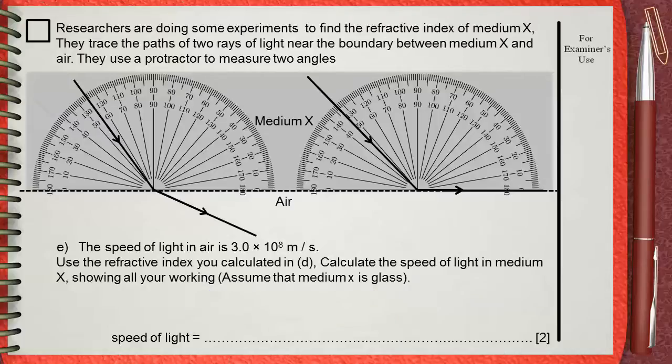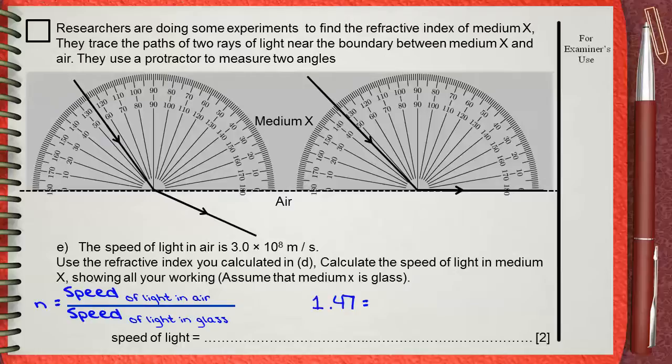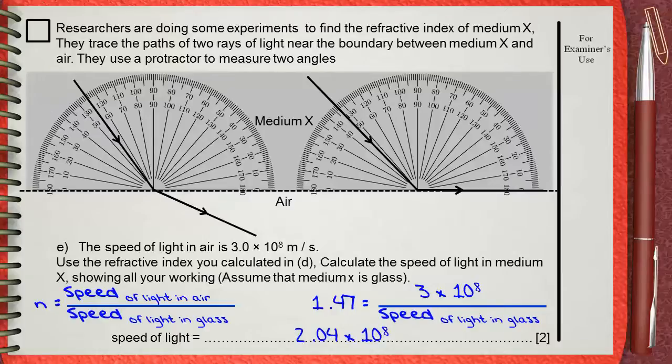I think now we need the rule. Refractive index equals speed of light in air divided by speed of light in medium. From D, we calculated the refractive index equals 1.47. Speed of light in air is 3 times 10 power 8. By doing our calculations, you can find that the speed of light in glass is 2.04 times 10 power 8 meters per second. Do not forget the unit.